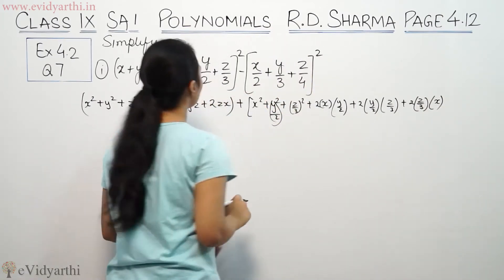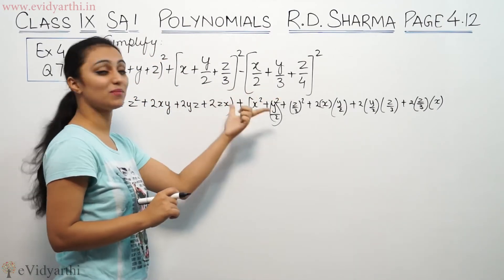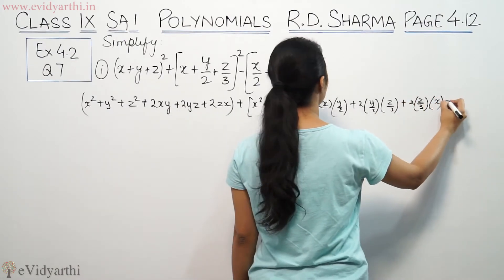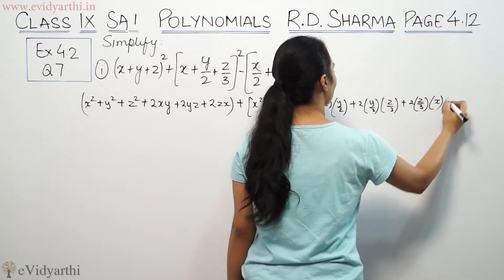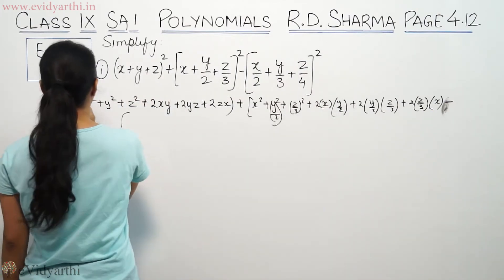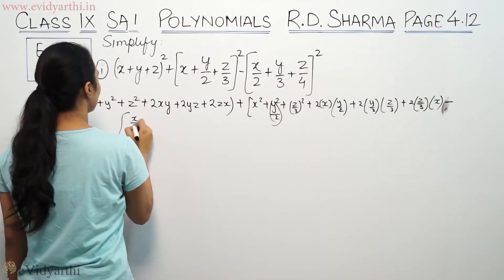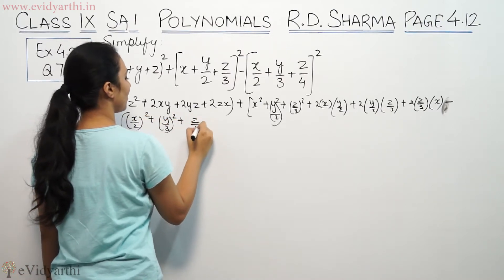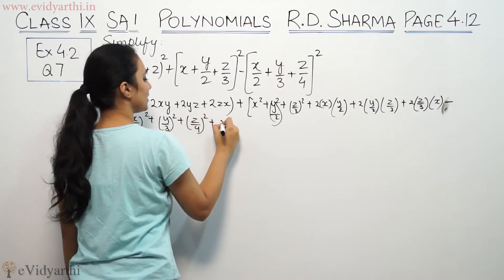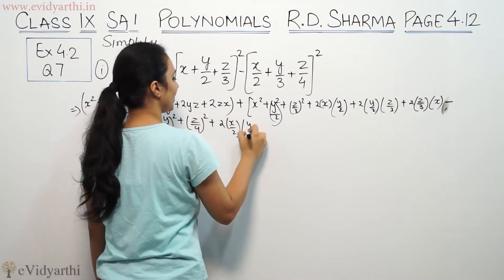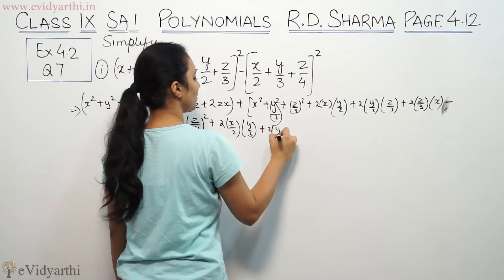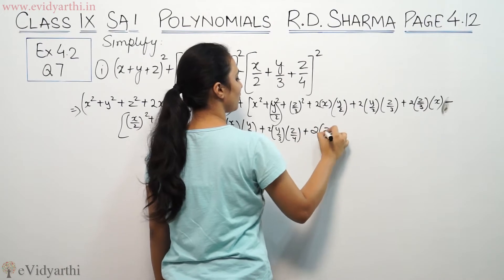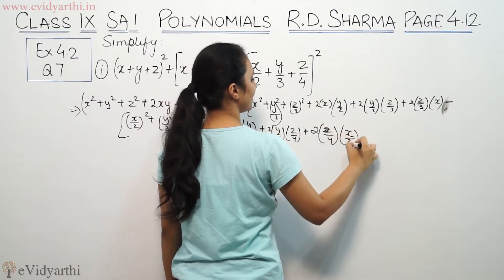If we want to subtract the third term, we open the bracket with negative sign: -(x/2)²+(y/3)²+(z/4)²+2(x/2)(y/3)+2(y/3)(z/4)+2(z/4)(x/2).